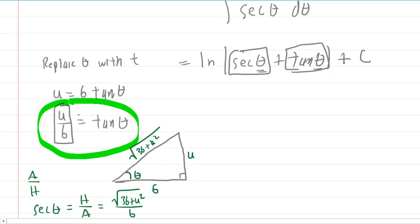And then again, your tan theta is u over 6. So we can go ahead and rewrite this as the natural log of the absolute value. Our secant theta will be the square root of 36 plus u squared all over 6 plus the tan theta, which is u over 6. Pretty good, but we still haven't gotten it in terms of t. Remember, we had to replace theta with a t rather than with a u. But that's okay.